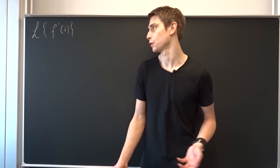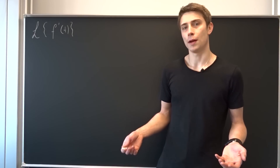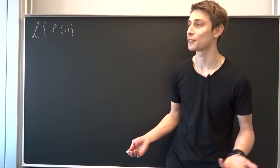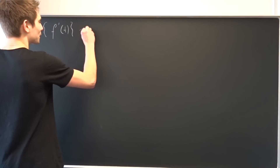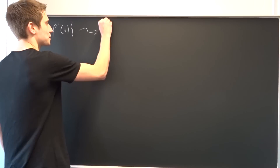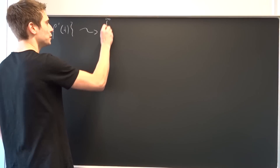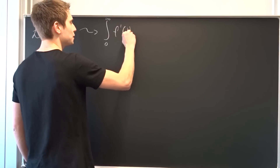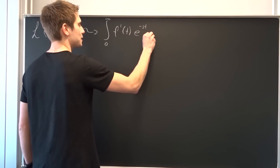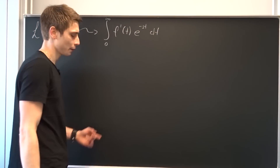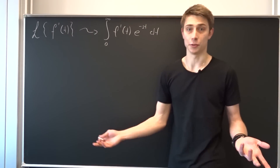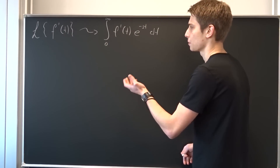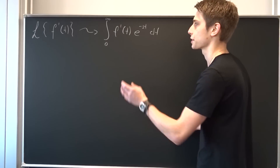What could we do at first? Maybe we could use the definition of the Laplace transform on this one — that would be a great idea. So the Laplace transform is just the improper integral from zero to infinity of f prime of t times e to the minus st times dt. And maybe you'll notice we should integrate this by using integration by parts — that's the easiest approach.